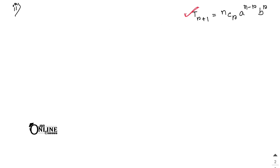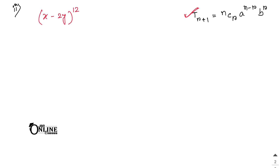Problem 2(ii): Find the fourth term of (x − 2y)^12. T4 = T(3+1), so r = 3, n = 12, a = x, b = −2y. I hope you can solve it from here.